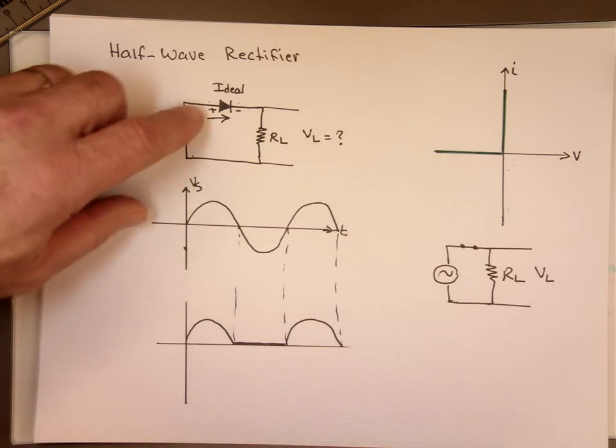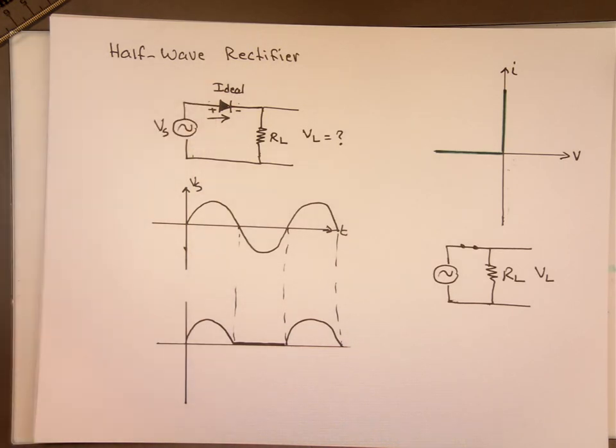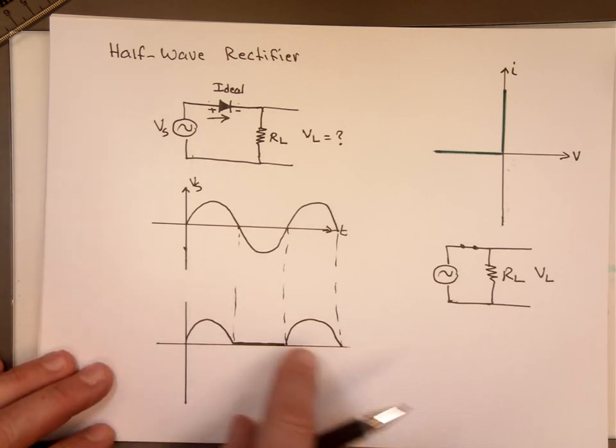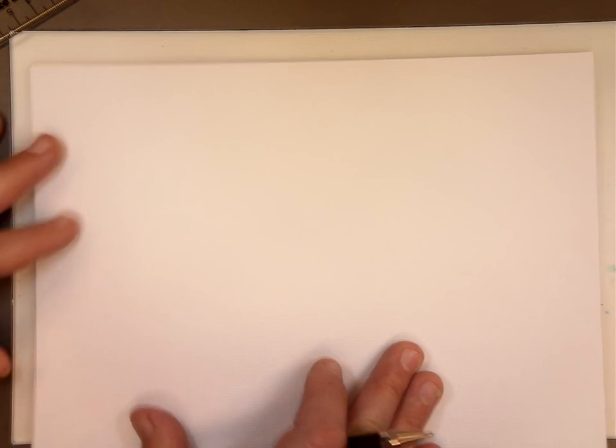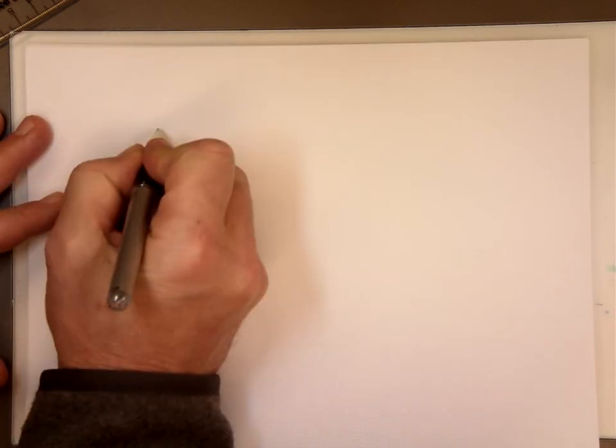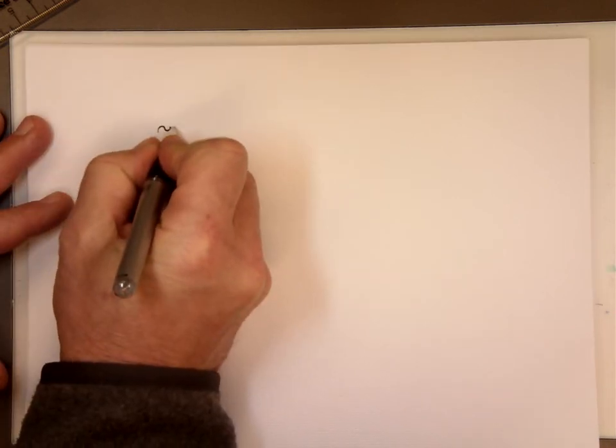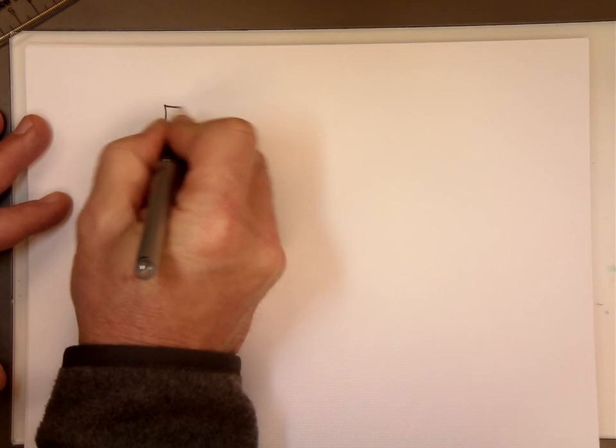If I reverse the direction of this diode, if I take it and I turn it backward, then you're only going to see the negative portion of it. So I'll do that again. So if I take the same circuit here, but put the diode backward now.